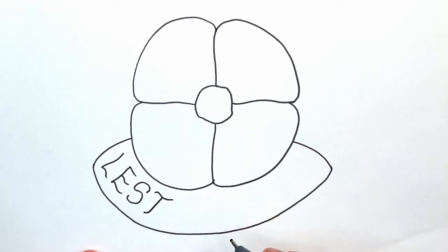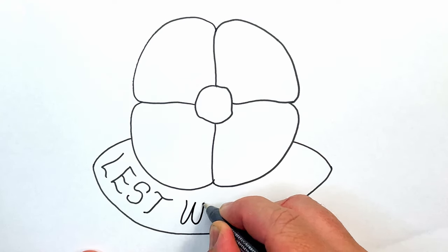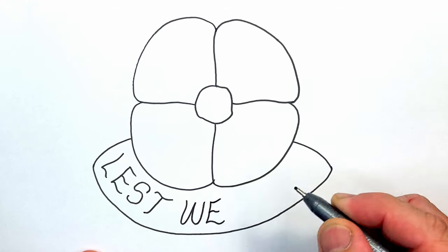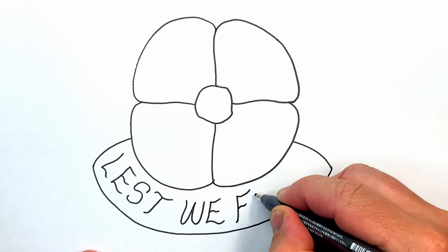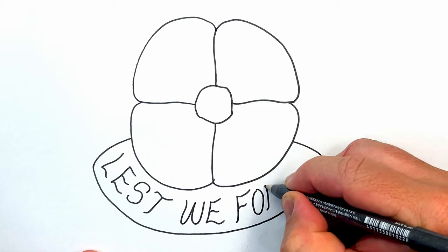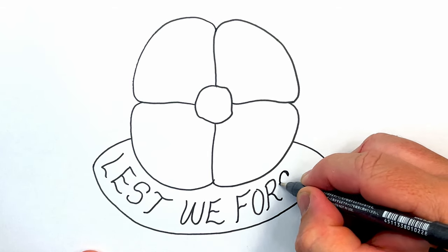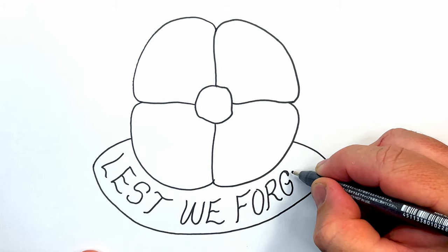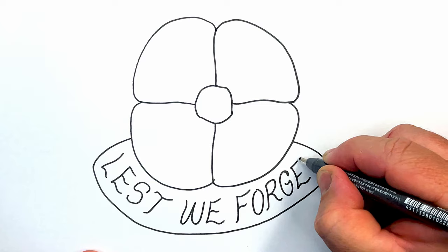and notice how I'm putting little kinks in them. W, and then E, and then forget. Let's never forget what they did. F, O, R, G, E, and then T.